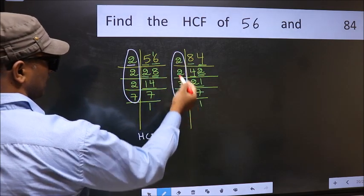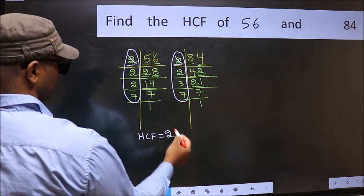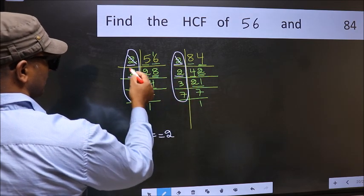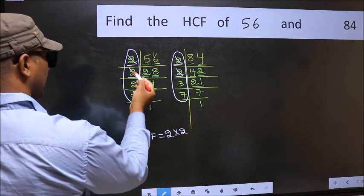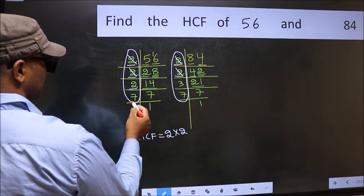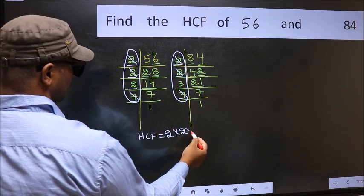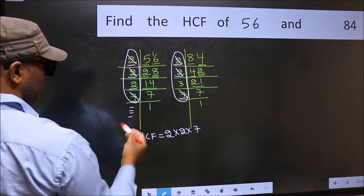Do we have 2 here? Yes. So cut 2 right here. Next number 2. Do we have 2 here? Yes. So cut 2 right here. Next number 2. Do we have 2 here? No. Next number 7. Do we have 7 here? Yes. So cut 7 right here. No more numbers have been left out.